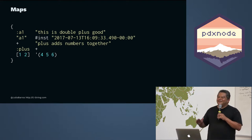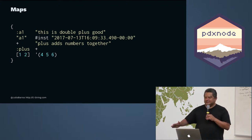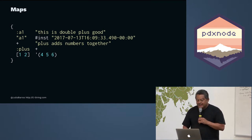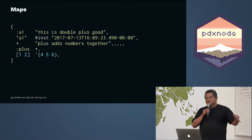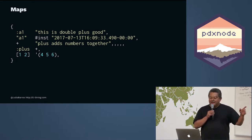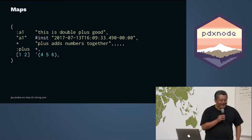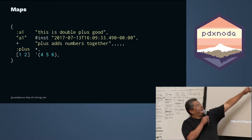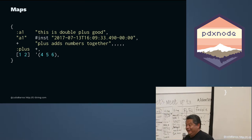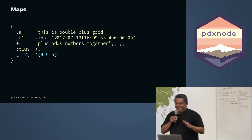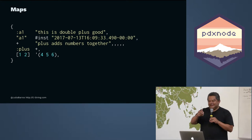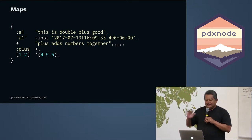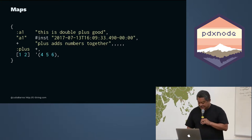I wanted to talk about the data structures because they're key. Commas are whitespace in ClojureScript, so you can add as many commas as you want wherever you want them. My personal favorite is that since they're optional, that trailing comma — the one that causes so much trouble in JSON and Python when you forget to delete it or add it — doesn't matter. So it's a simple thing, but commas are optional.